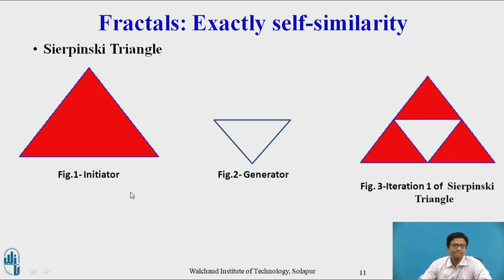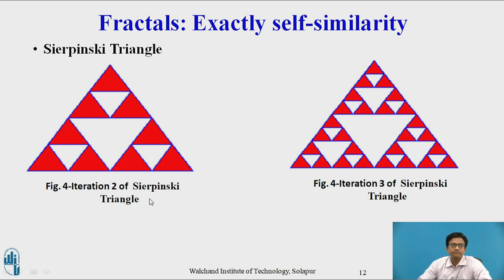In the Sierpinski triangle example, this is the initiator and generator. In iteration one, we divide the triangle into equal halves and remove the middle triangle, creating three new triangles. Again each part is divided into three parts — this process is repeated. In iteration two we divide again, and iteration three of Sierpinski triangle is obtained by repeating this further.